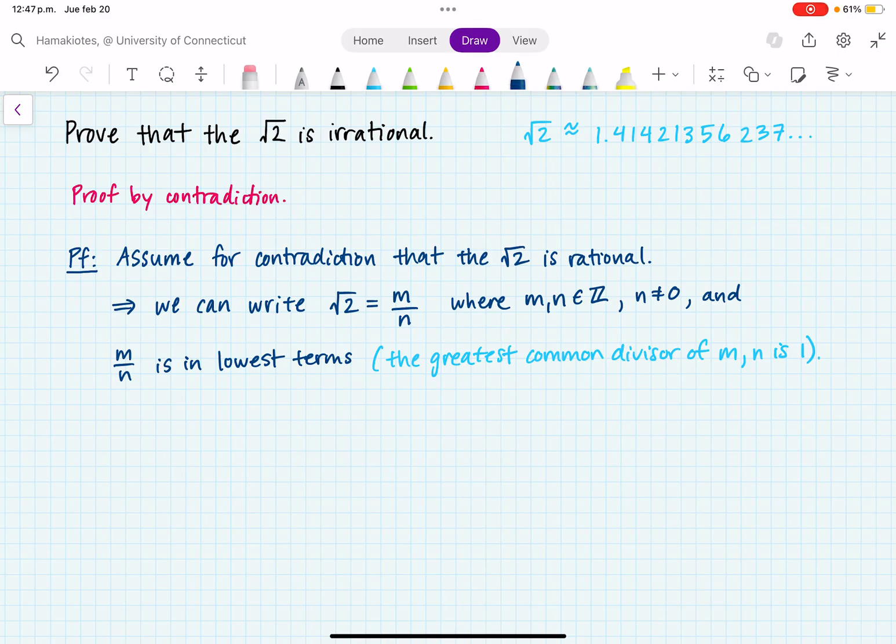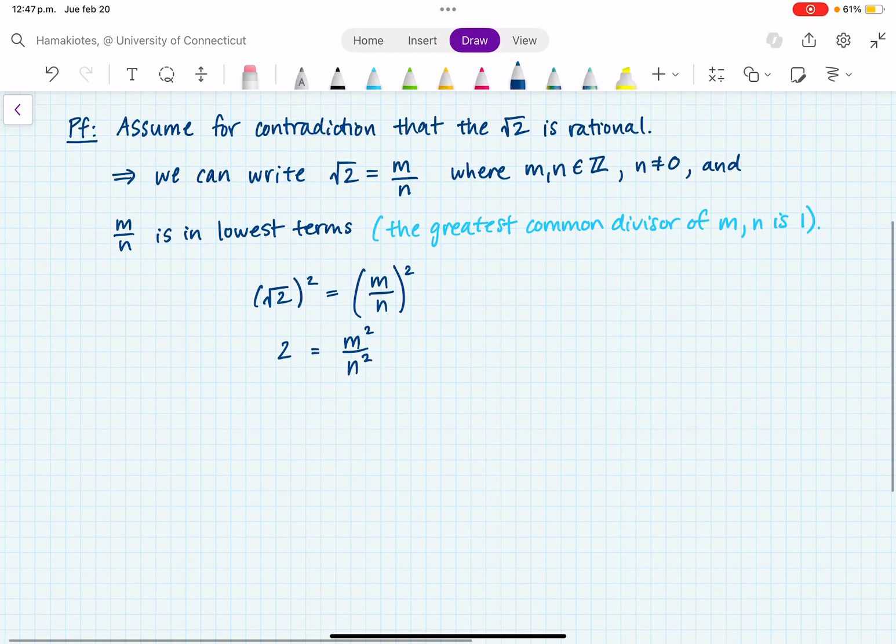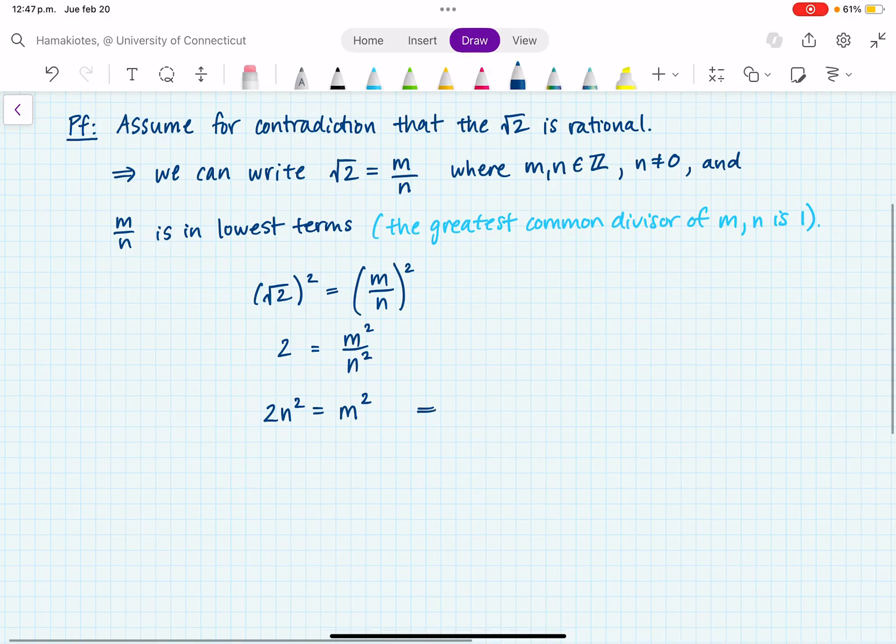So now let's see what happens when we square this. We'll take the square root of 2 and square it, and we also want to square m over n. So what does that give us? That gives us that 2 equals m squared over n squared, and now I can multiply both sides by n squared to get 2n squared equals m squared. Now what does that tell me? That tells me that m squared equals 2 times a number. So in particular, this tells me that 2 divides m squared.